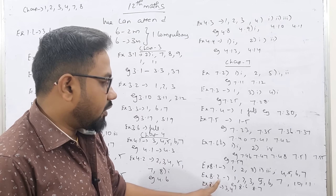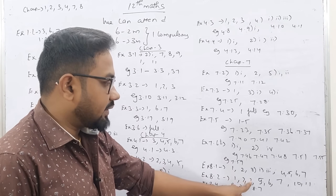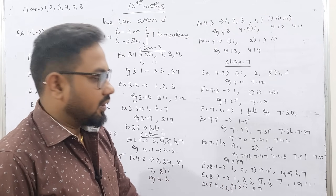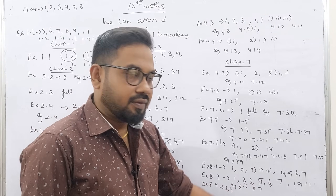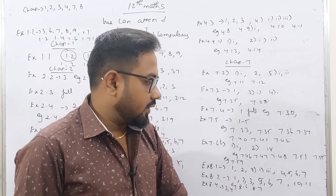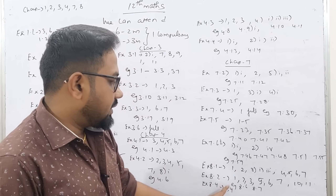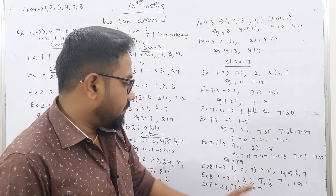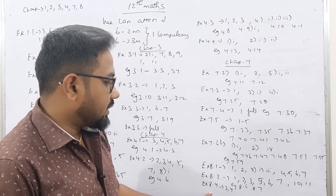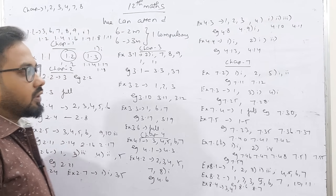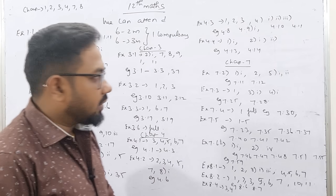X is 8.0 — 1st, 2nd, 3rd, and 5th, 6th, 7th, 10th, 11th. Example 8.6, 8.7. X is 8.4 — 3rd, 4th. So this is 8.5.